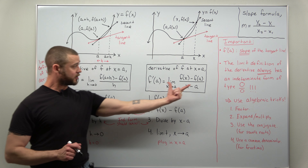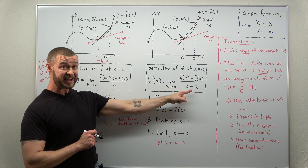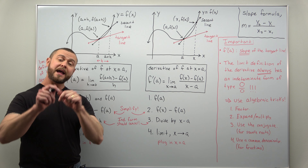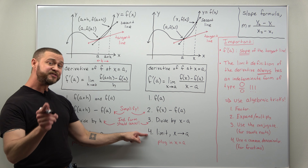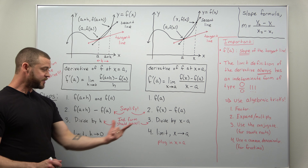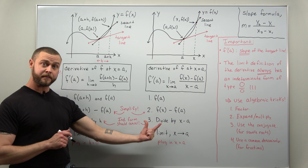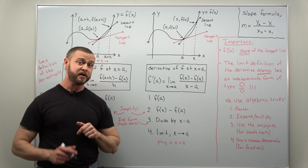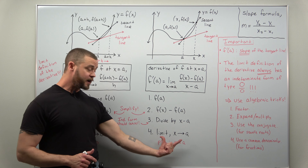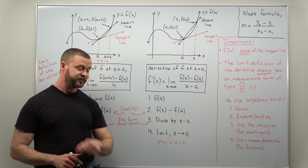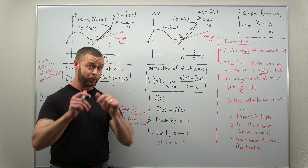Once you go through step two calculating the numerator, step three is to divide — but here you're dividing by x minus a. Step four is to take a limit as x approaches a. Just as in the first version, in step three when you divide you should find that the factor giving you the indeterminate form cancels out, so in step four you can typically evaluate the limit by plugging in x equal to a.